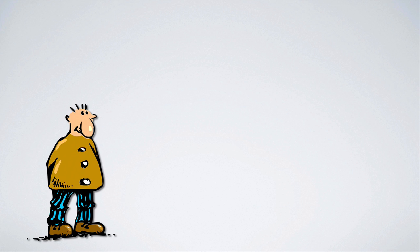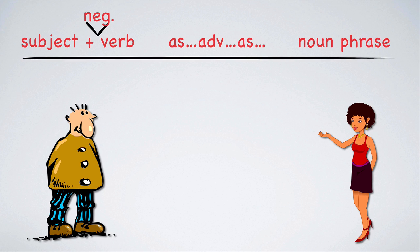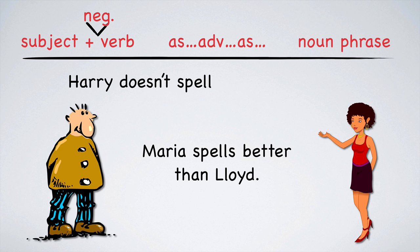They are both terrible spellers. I guess we could say Harry spells as well as Lloyd, even though they're both terrible. Isn't ambiguity wonderful? Let's give Harry another chance. Harry, how do you spell dog? I like doggies. Horrible. Maria, would you like to give it a try? D-O-G. Clearly, Maria spells better than Lloyd. Let's write the sentence using a negative verb. Harry doesn't spell as well as Maria.